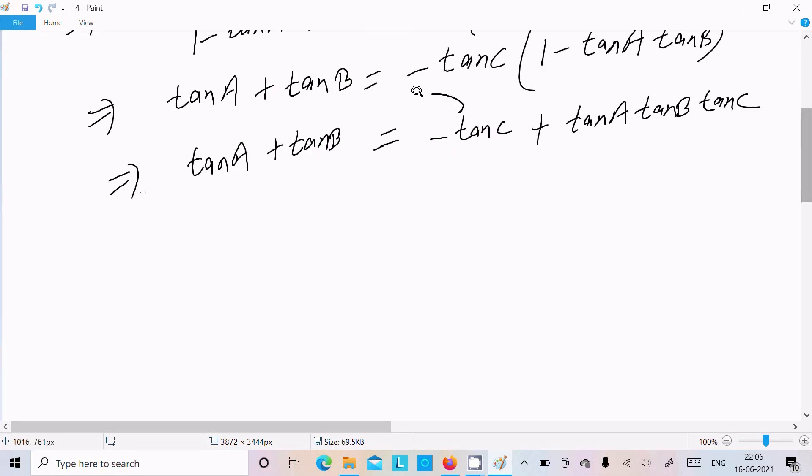There after, this tan C move on the left, so we can write tan A plus tan B and this is now tan C equals tan A tan B tan C.